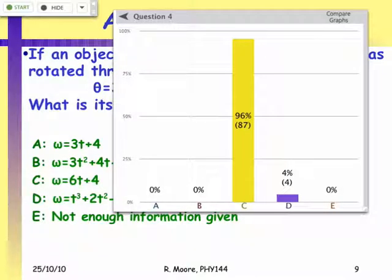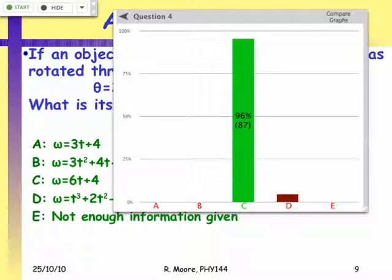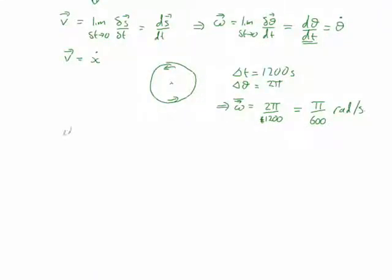For an object rotating with angle θ = 3t² + 4t − 3, the instantaneous angular velocity is dθ/dt. Differentiating gives ω = 6t + 4 radians per second.